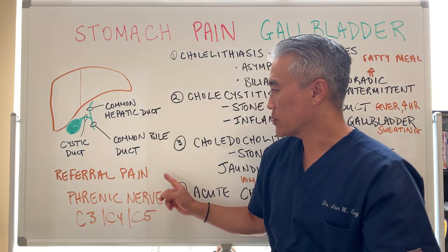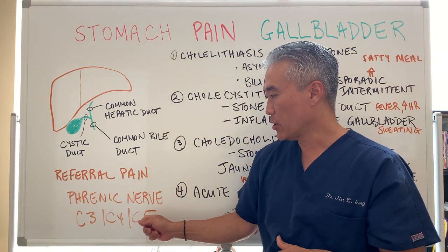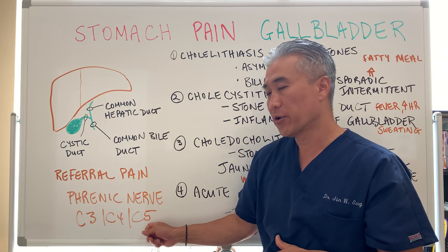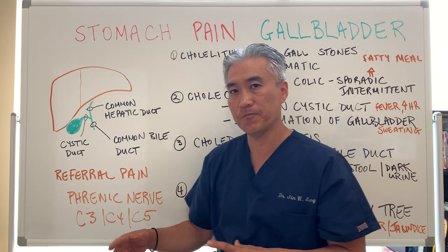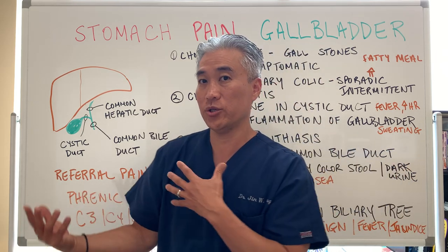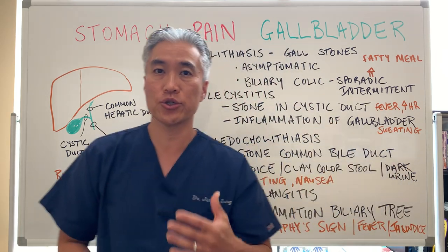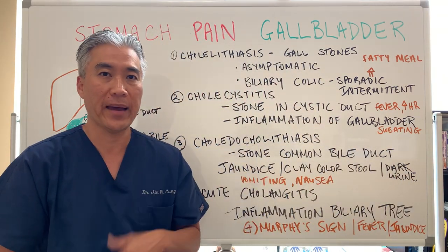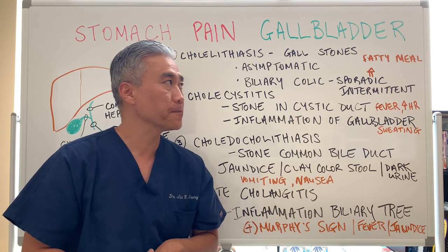This phrenic nerve travels back up into the neck area and causes dermatomal pain related to C3, C4, and C5. So you may have pain generalized into the right shoulder and into the mid-back region, or what we call the mid-scapular region. The referral pain is a result of nerve irritation that refers into the right shoulder and mid-back area.